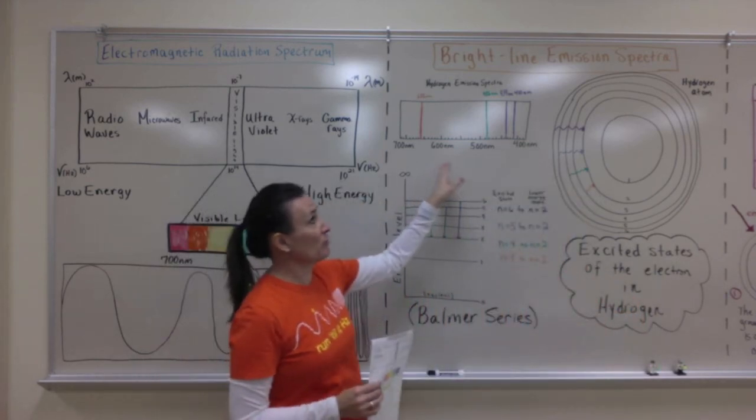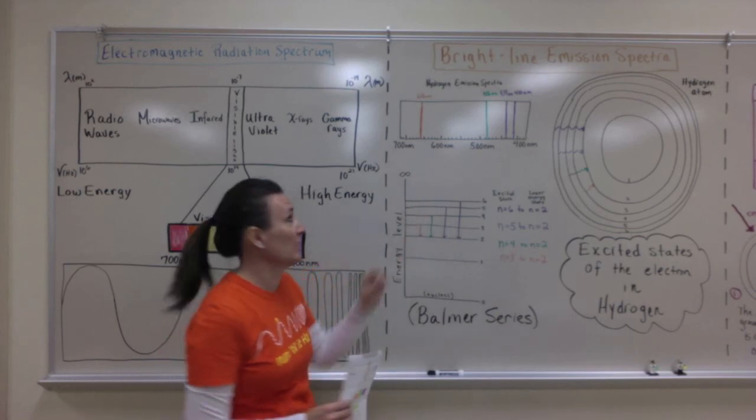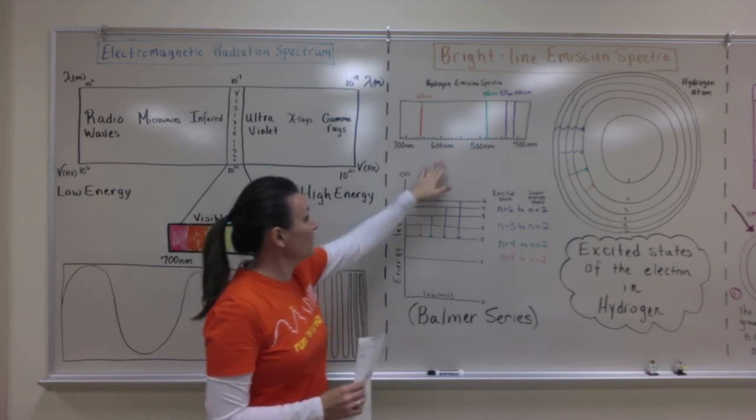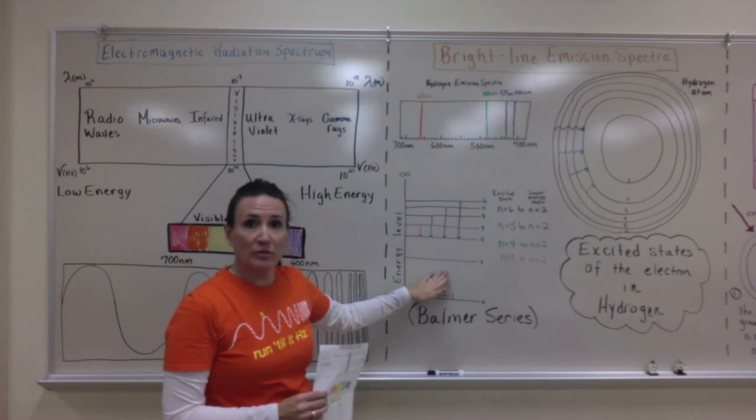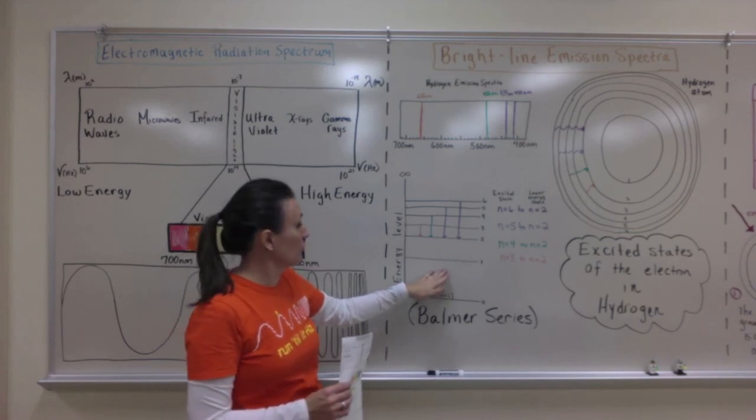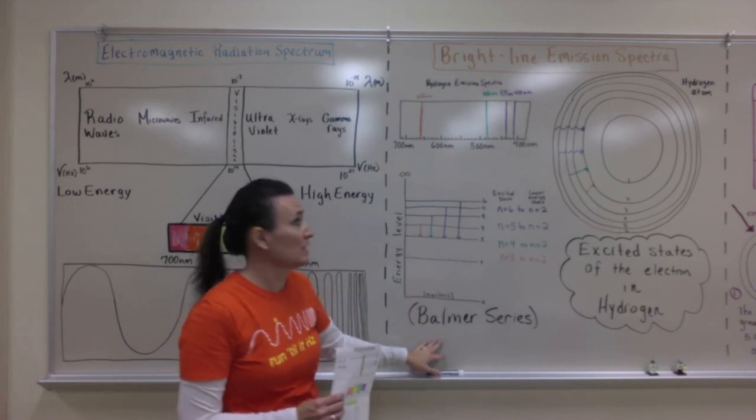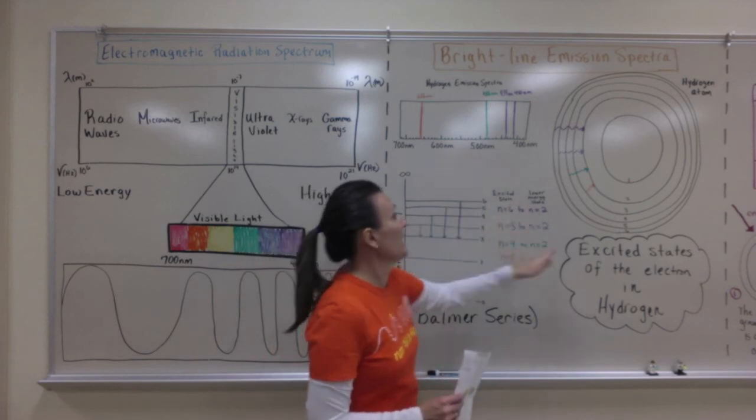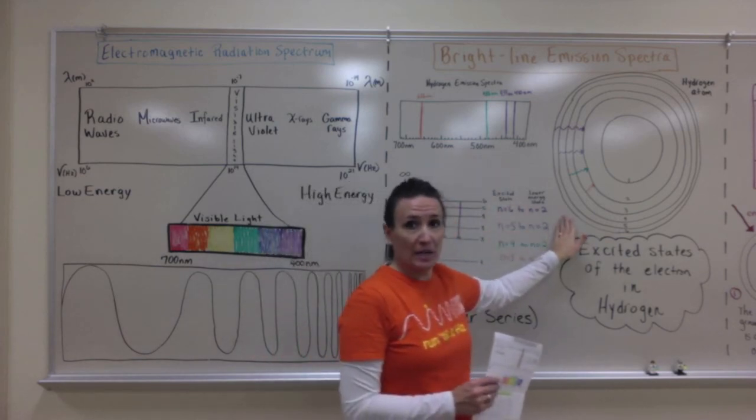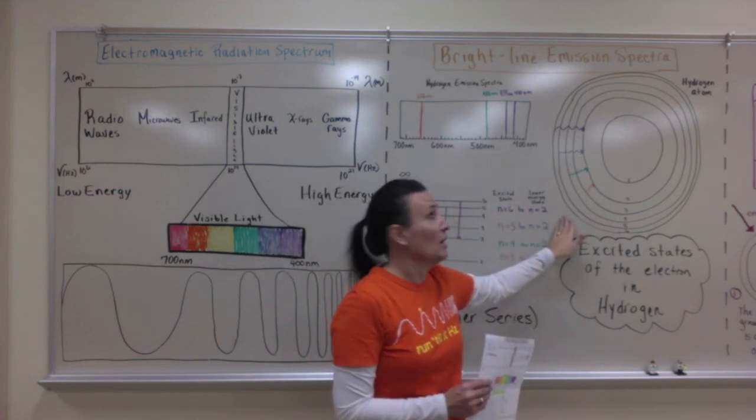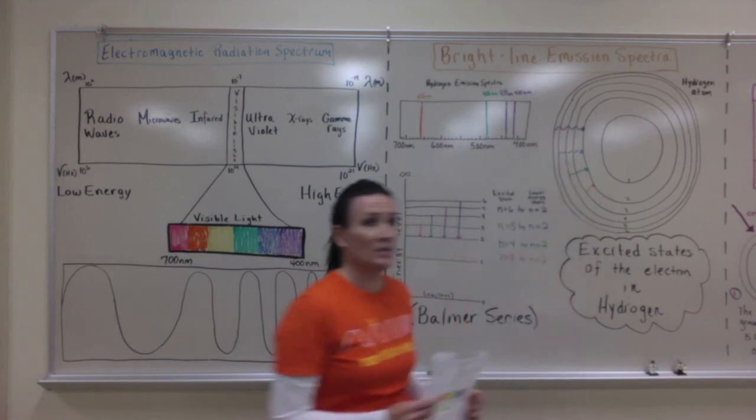On the next section down, you'll have the bright line emission spectrum represented three ways for the hydrogen atom: the emission spectrum of hydrogen, the different energy level changes that the electron could go through, which is called the Balmer series, to give off those four lines, and a hydrogen atom diagram showing you the same thing of how those four different emission lines are produced in the hydrogen atom.